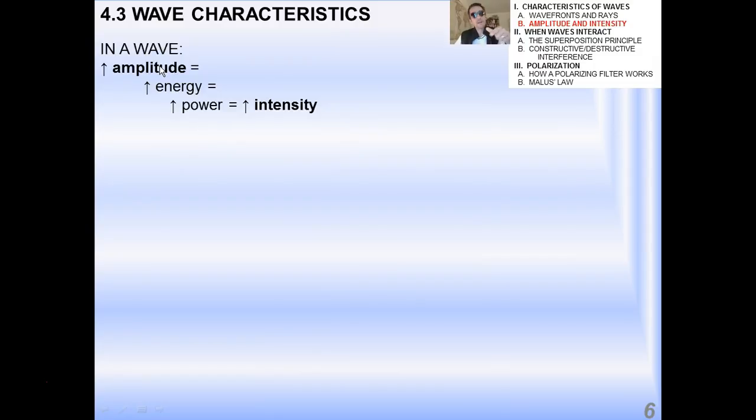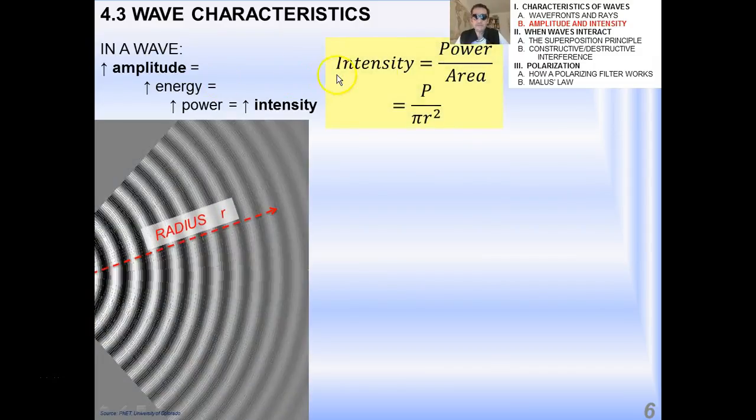So, again, in a wave, amplitude, greater amplitude, greater energy, greater power, greater intensity. Now, if you think about intensity as power over area being P over pi R squared, okay? In the case down here of, like, for example, sound waves, right, you can see the faded gray indicates that the intensity or the amplitude is lessened as it spreads out across a room, for example. And the radius is simply the distance of a particular wave from the original source of the sound, radius R.